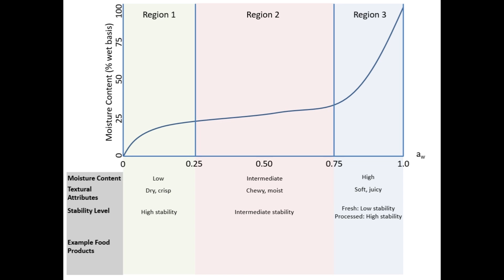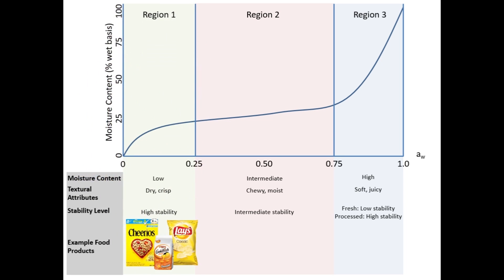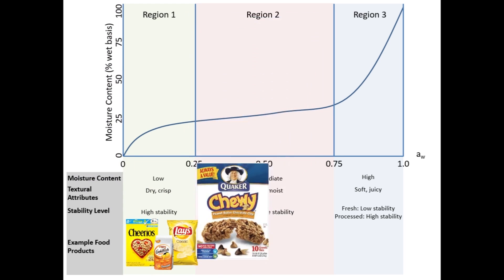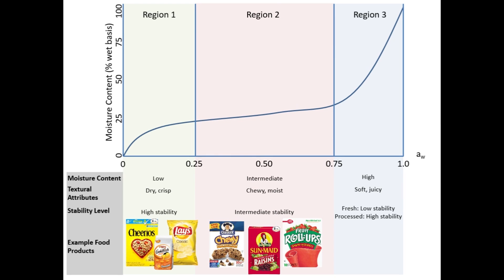Some examples of food products in region 1 are cereal, chips, and crackers. Foods in region 2 include chewy granola bars, raisins, and fruit roll-ups. Food examples for region 3 include fresh fruits and vegetables, milk, and meats.